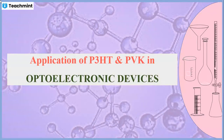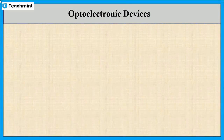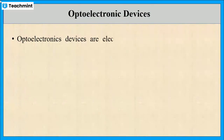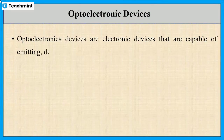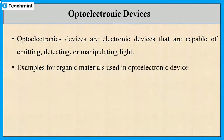In this session, I am going to explain about the application of P3HT and PVK in optoelectronic devices. First, let us see what optoelectronic devices are. These are electronic devices that are capable of emitting, detecting, or manipulating light. There are many organic materials used in optoelectronic devices.